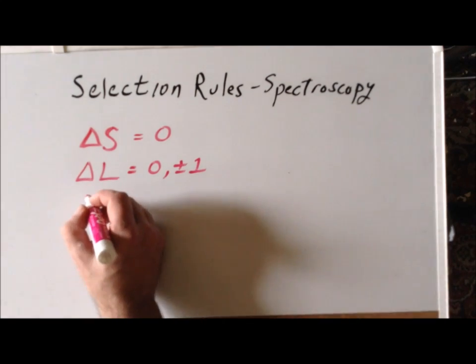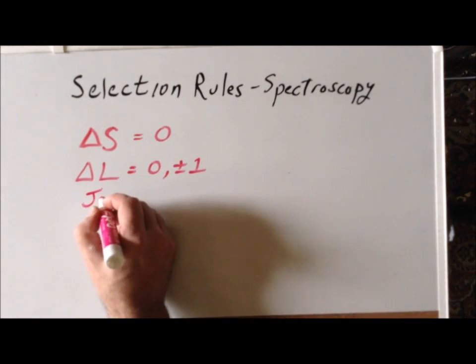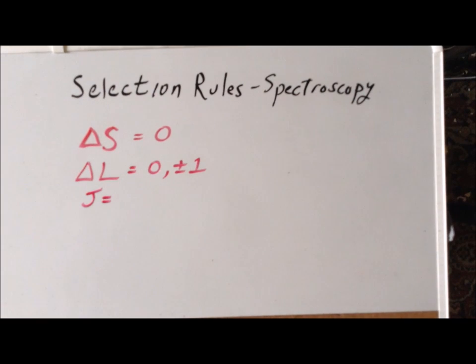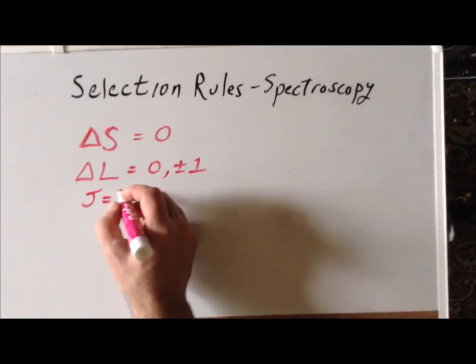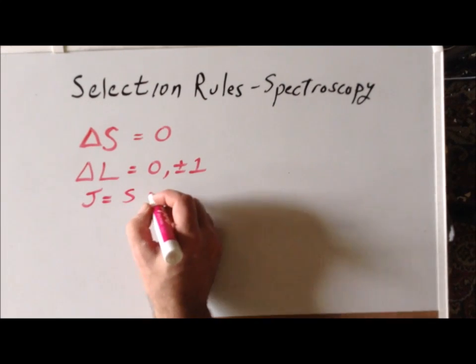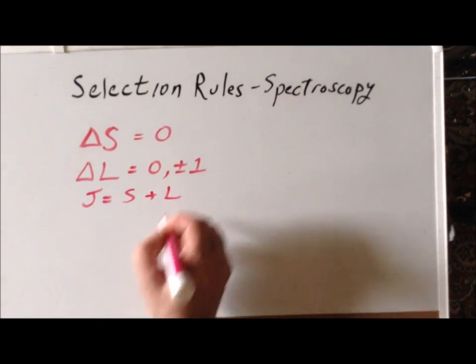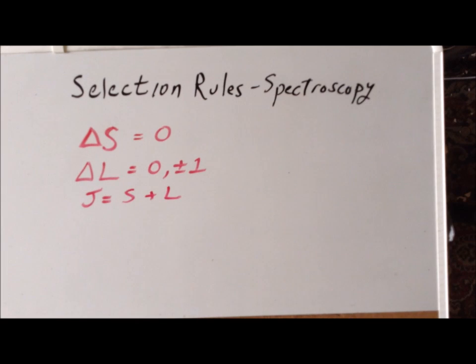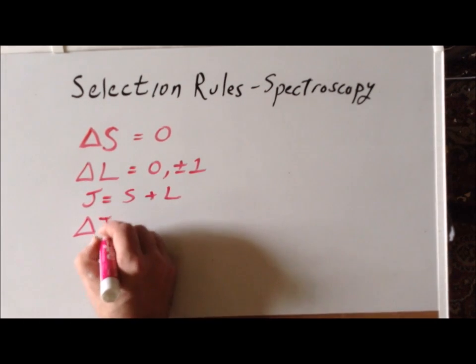Again, in the case of multi-electron systems, we have a new quantum number J, which is the spin orbit coupling, which is the interaction between the total spin momentum and the total orbital angular momentum. And we have appropriate selection rule for the change in J.